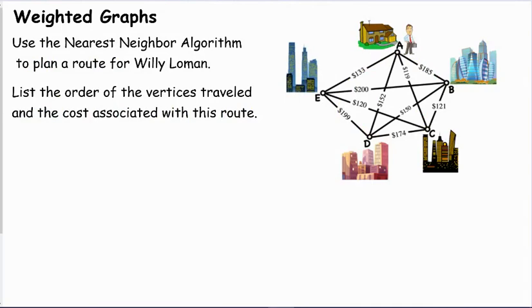And that is how we solve a nearest neighbor problem with Hamilton circuits and graphs. So now if we go back to the Willy Loman problem, it says list the order of the vertices traveled and the cost associated with this route. And we want to use the nearest neighbor algorithm. And Willy's home city is A. So we want to start and end at A. So we look at this and we say the cheapest edge connected to A is from A to C. So say A, C, and I'll write down the $119.